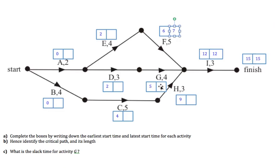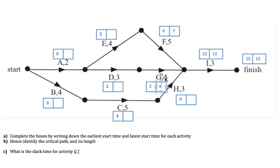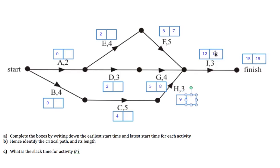Activity G also needs to finish in time for I to start at 12. Activity G has a duration of 4, so it must start at the latest by 8 — if it starts at 8 and takes 4, then I can still start by 12. Likewise for H: H takes 3 and needs to finish by 12 so that I can start. Therefore, the latest possible time that H can start is 9, because 9 plus 3 equals 12.